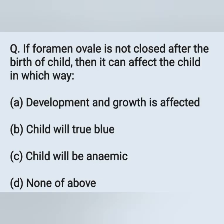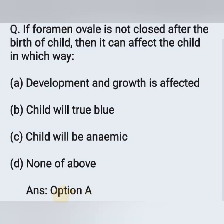If foramen ovale is not closed after birth of a child, then it can affect the child in which way? Option A: development and growth is affected. Option B: child will turn blue. Option C: child will be anemic. Option D: none of the above. Usually, foramen ovale will close during the time of birth. If it is not closed after birth, it will affect the growth and development of the child. So Option A is the correct answer.